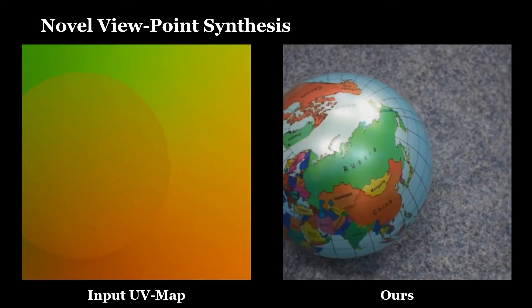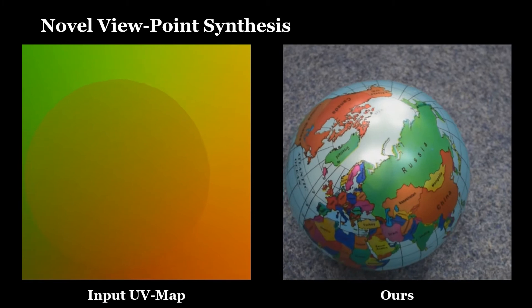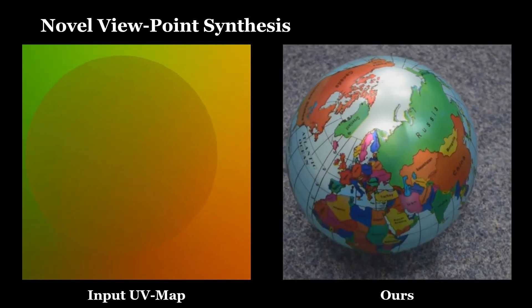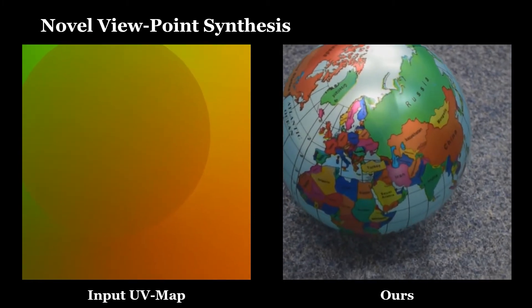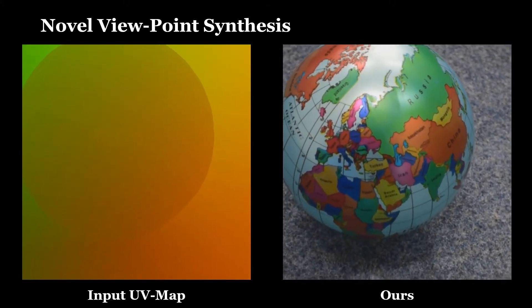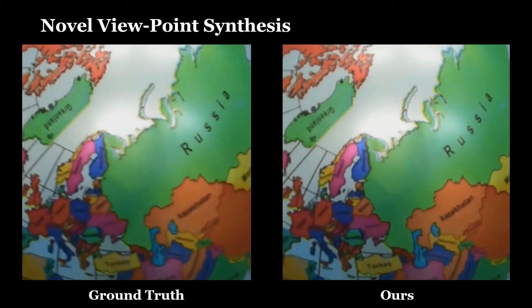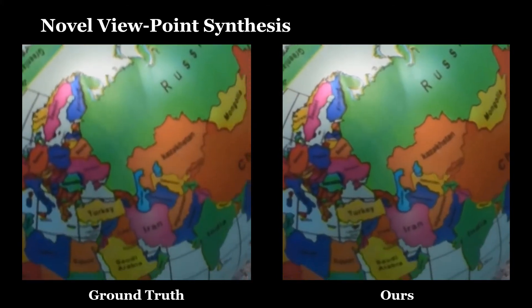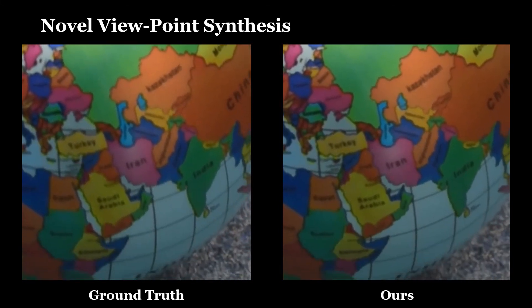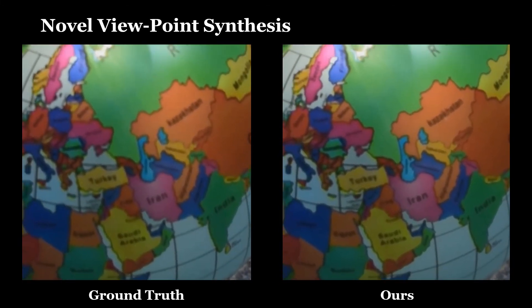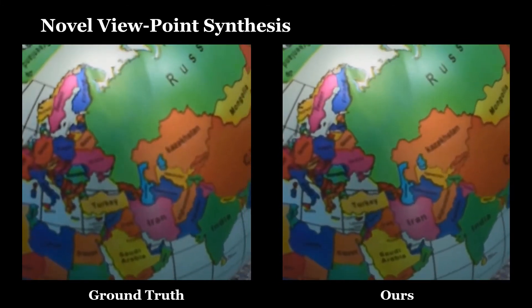We first demonstrate the re-rendering capabilities, which allows us to display an object under novel views. Given the UV map on the left, we can generate the output on the right. As can be seen in this close-up, we are able to capture fine-scale details as well as view-dependent effects like specular highlights.